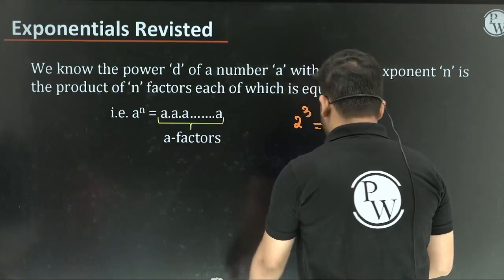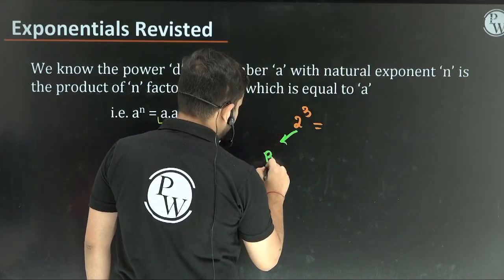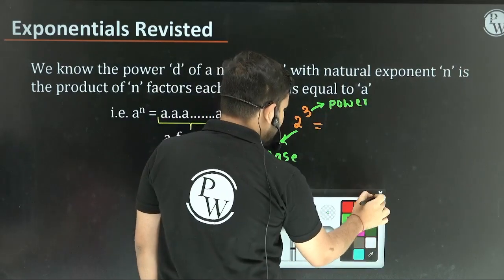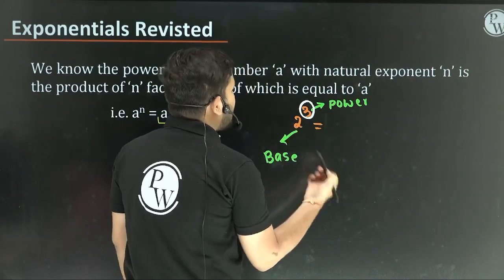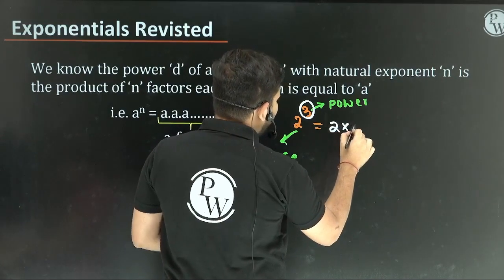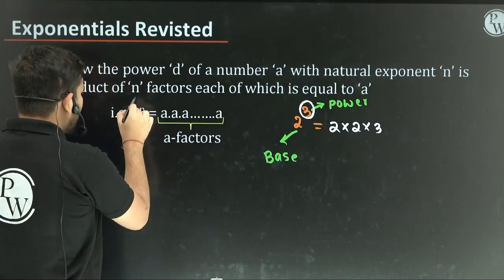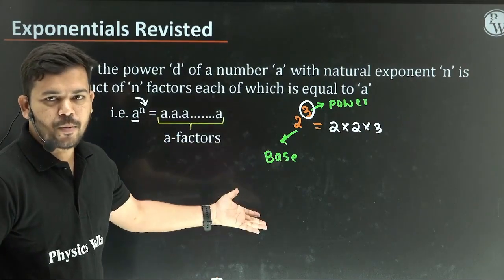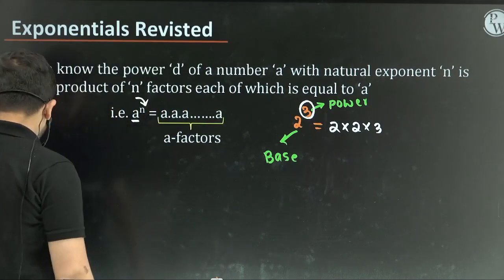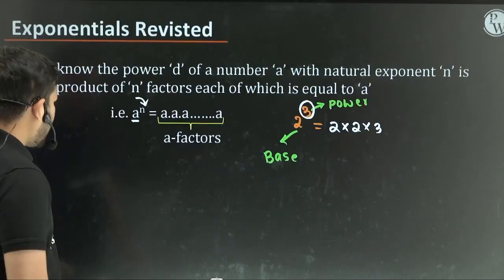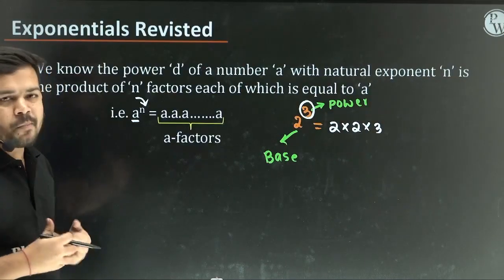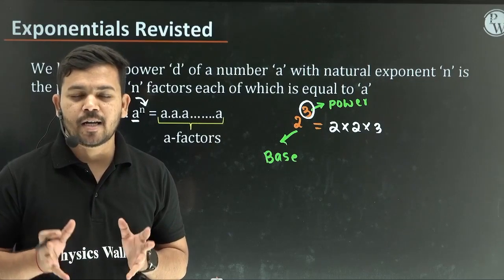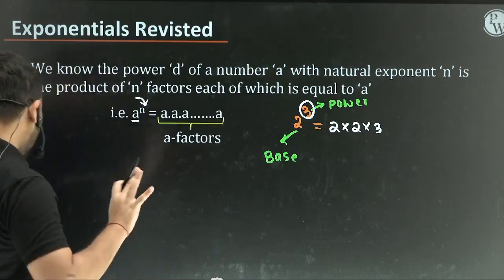So 2 to the power of 3 — here this is called the base, and this 3 is called the exponent or power. So this base multiplied 3 times, the same thing. In general, a to the power of n means multiply a that many times. This representation is easy for not-so-large numbers.